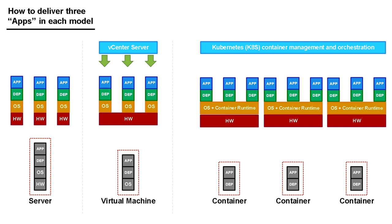Another reason you might have many containers: let's say we've got application one, two, and three all installed in Europe. I might then deploy the same three applications in Asia Pacific, so I've got two copies of each application. Then do it again for the Americas — so now each of the three applications is running from Europe, Asia Pacific, and the Americas. That gives us fault tolerance and resilience, and we're doing things in a more cloud-native way. That's another reason why you've got lots of containers and Docker image deployments.